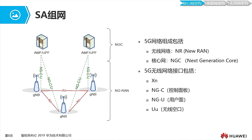This is our 5G target networking method — standalone networking. Through this networking method, we can provide slicing capabilities to enable our vertical industries. We divide the physical network into a slice for the power grid to use, divide a slice for car companies to use, to provide smart grid services, vehicle networking services, and so on. This is our SA network architecture.